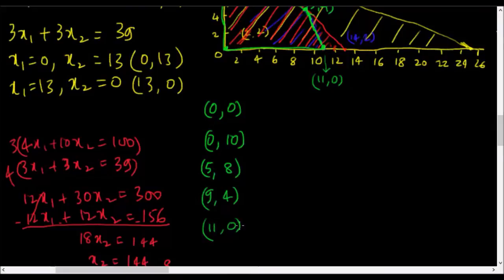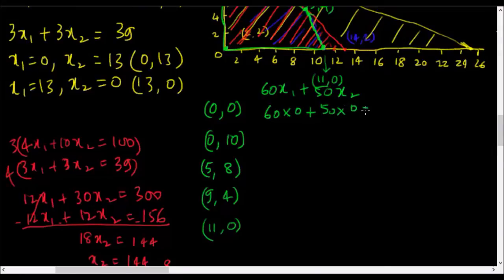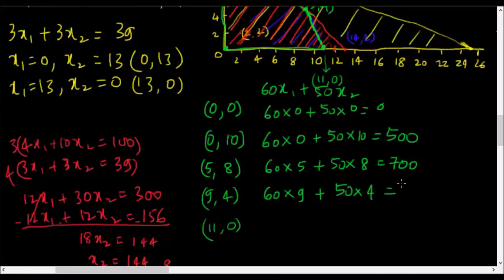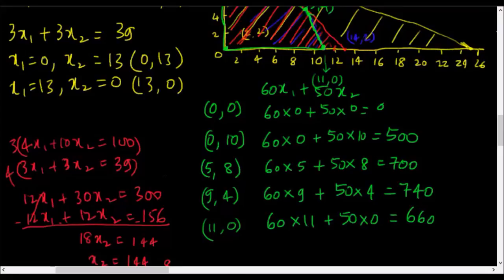Using these five corner points — (0,0), (0,10), (5,8), (9,4), and (11,0) — I'll insert each into the objective function 60x1 + 50x2 to find maximum profit. At (0,0): profit = 0. At (0,10): 50 times 10 = $500. At (5,8): 60 times 5 plus 50 times 8 = 300 plus 400 = $700. At (9,4): 60 times 9 plus 50 times 4 = 540 plus 200 = $740. At (11,0): 60 times 11 = $660.